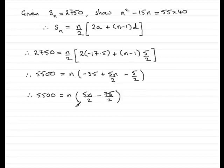Now let's multiply both sides by 2 again and expand out the bracket. So if I multiply both sides by 2, then this becomes 11,000. And what do we got here? Well we're going to have n times 5n, so that's 5n squared. And then n times minus 75, so that's minus 75n.